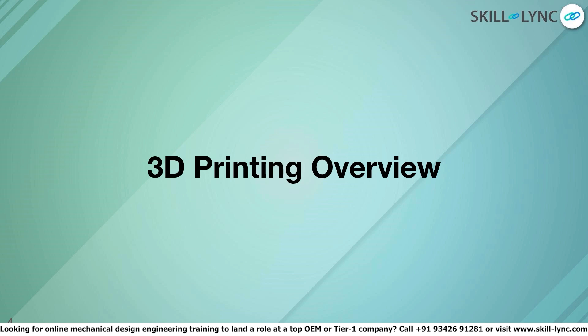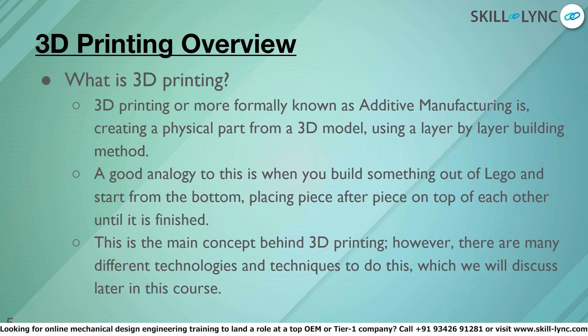3D printing overview. So what is 3D printing? Well, 3D printing — or more formally known as additive manufacturing — is creating a physical part from a 3D model using a layer-by-layer building or manufacturing method. A good example to think about is similar to when you build something out of LEGO, where you place a piece at the bottom and then another piece on top of that, and so on and so forth until you end up with your completed model. The same analogy applies to 3D printing.